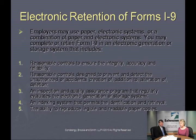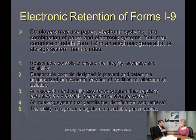You need reasonable controls to ensure the integrity, accuracy, and reliability of the records. Reasonable controls should be designed to prevent and detect unauthorized or accidental creation, addition, or alteration — you want to make sure they can't be altered, that they're static documents. You also need an inspection and quality assurance program that regularly evaluates the electronic generation or storage, an indexing system that permits identification and retrieval, and the ability to reproduce legible and readable paper copies. If ICE comes in and does an inspection, they're going to ask you to produce paper copies, so you need to be able to print them out.